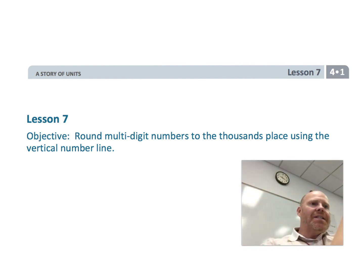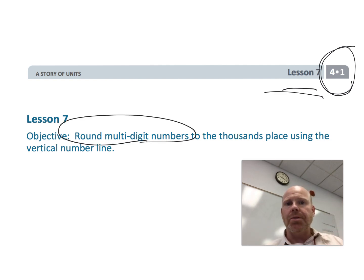All right, this is fourth grade, module one, lesson seven. In this lesson, we're going to be continuing to round multiple digit numbers. We're going to be rounding to the thousands place, and we're going to continue using that vertical number line, because really what we want is for our kids, our students,